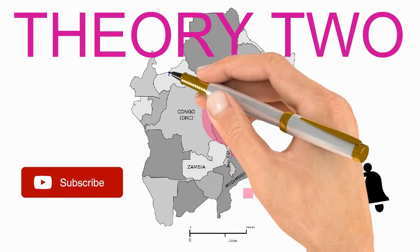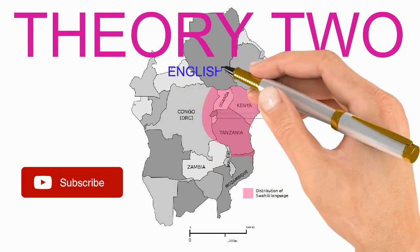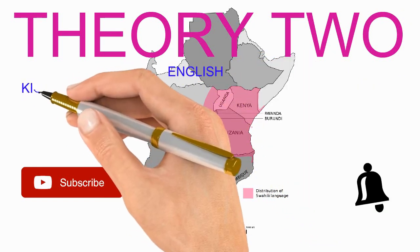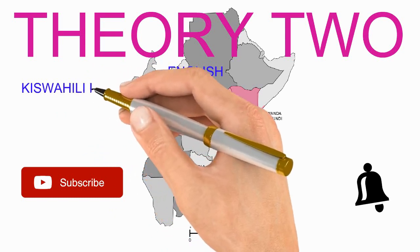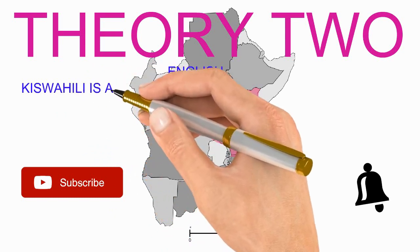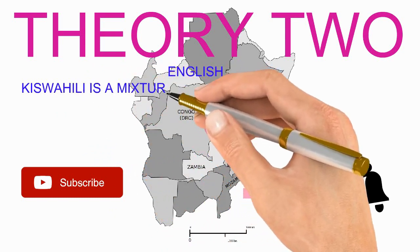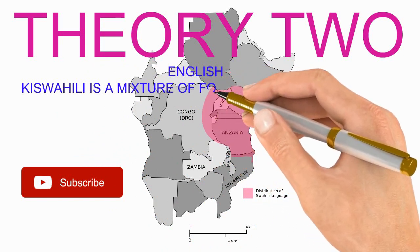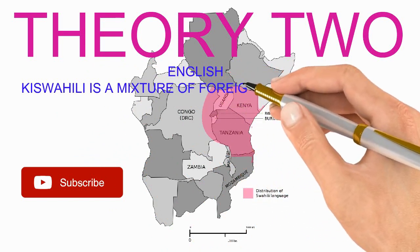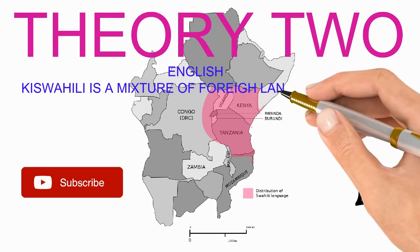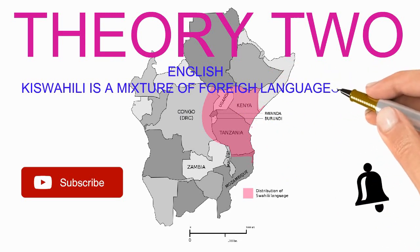In our last lesson, we were talking about the origin of Kiswahili, where we have three theories that try to explain the origin of Kiswahili. If you want to check on the first theory, check our videos on this channel and subscribe so that you will know about Kiswahili.